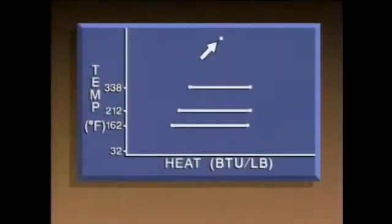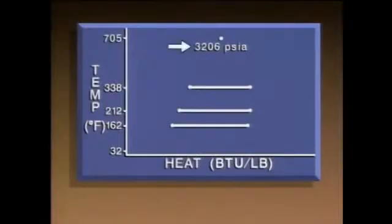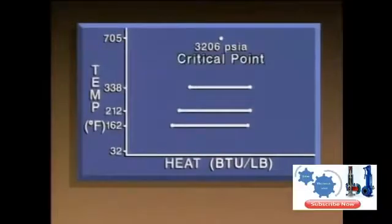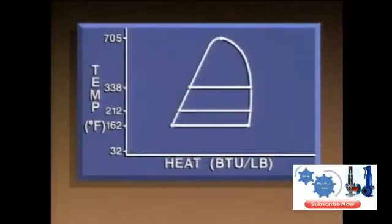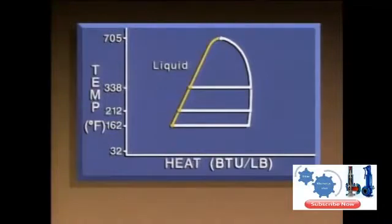There is a point at which the latent heat of vaporization is zero BTUs per pound. This occurs at a pressure of 3,206 PSIA and a boiling temperature of 705 degrees Fahrenheit — this is called the critical point. Above the critical point, water flashes to steam with no latent heat transfer, and water exists as a superheated vapor, which is a vapor whose temperature is higher than its boiling temperature. We can draw a curved line connecting these points called the saturation curve. Points to the left of the critical point represent liquid at the boiling temperature for a given pressure; points to the right represent vapor at the boiling temperature.